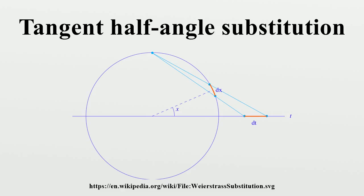As t goes from 0 to 1, the point follows the part of the circle in the first quadrant. Finally, as t goes from 1 to plus infinity, the point follows the part of the circle in the second quadrant.